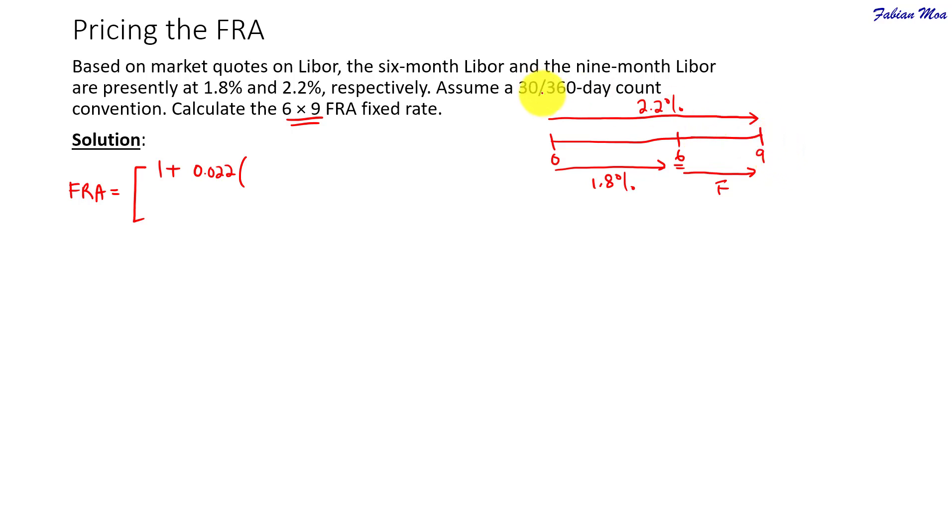Okay, or in a similar way, you can convert the number of days. So, if you assume that every month is 30 days, so this would be 270 days and then 6 months would be 180 days. So, you will take 270 over 360 days or we can just take 9 over 12 and then we divide by 1 plus the LIBOR for the shorter maturity from 0 to the excess.